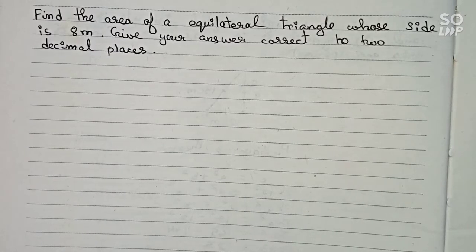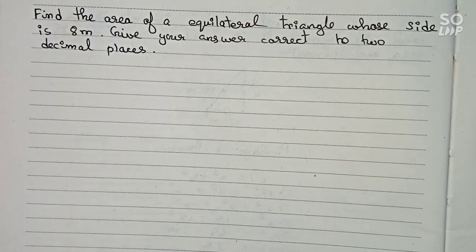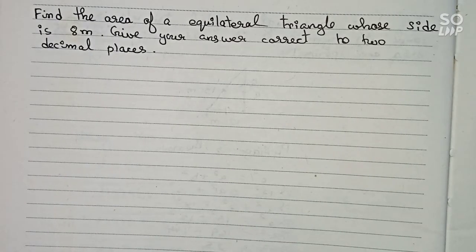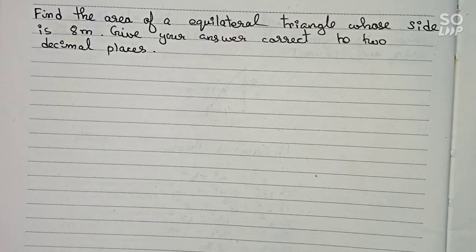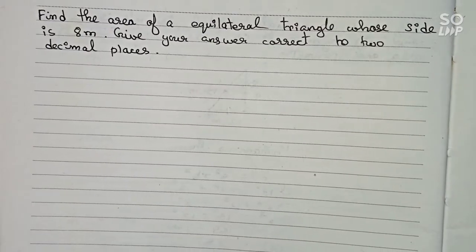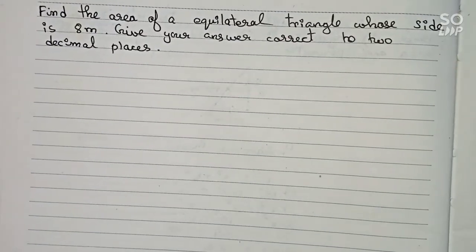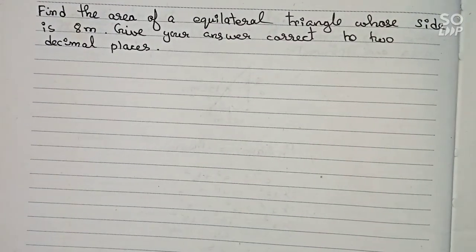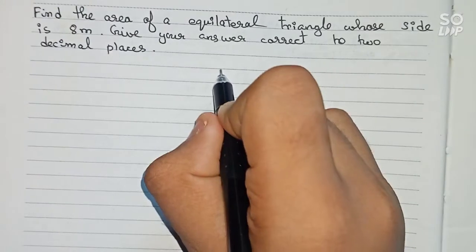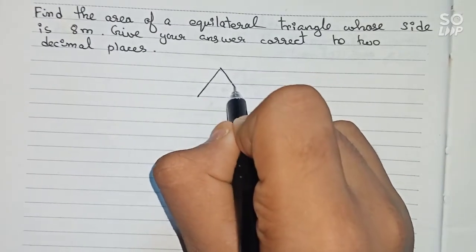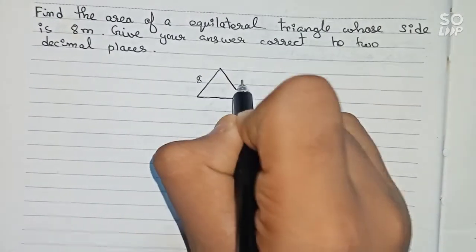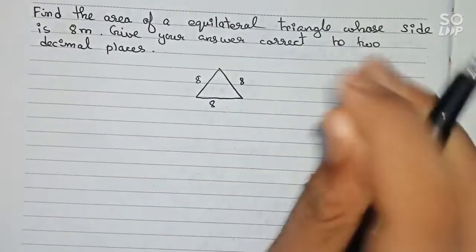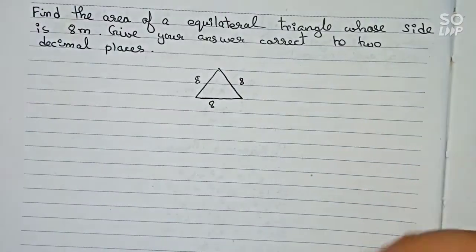Hello guys, welcome to this video. In this video, our question is: find the area of an equilateral triangle whose side is 8 meters, and give your answer correct to two decimal places. For this question, first I draw a rough diagram. Since it's an equilateral triangle, all sides are equal — this side 8, this side 8, and this side also 8. Now I have to find out the area.